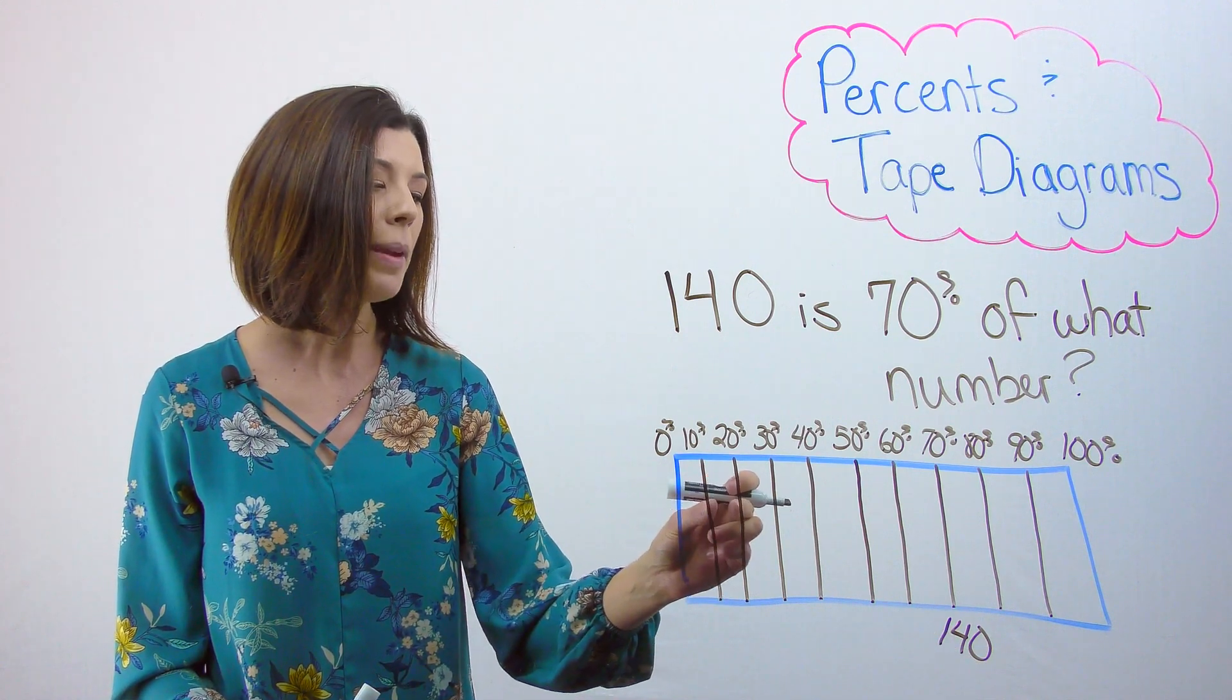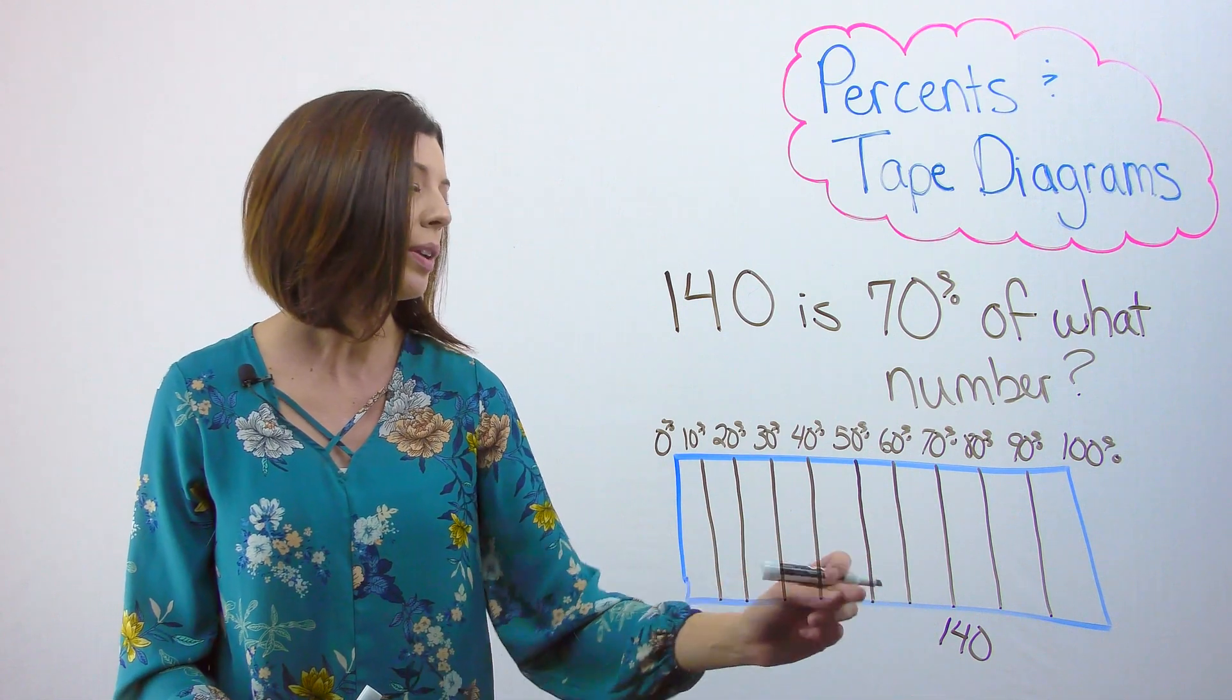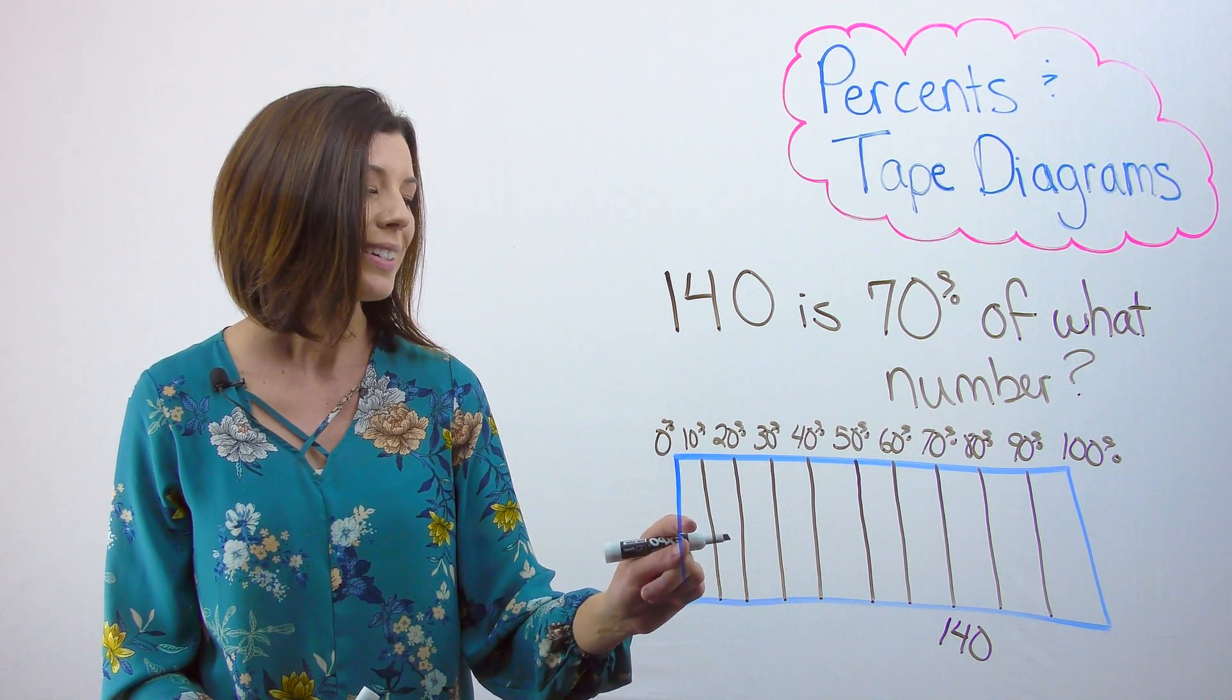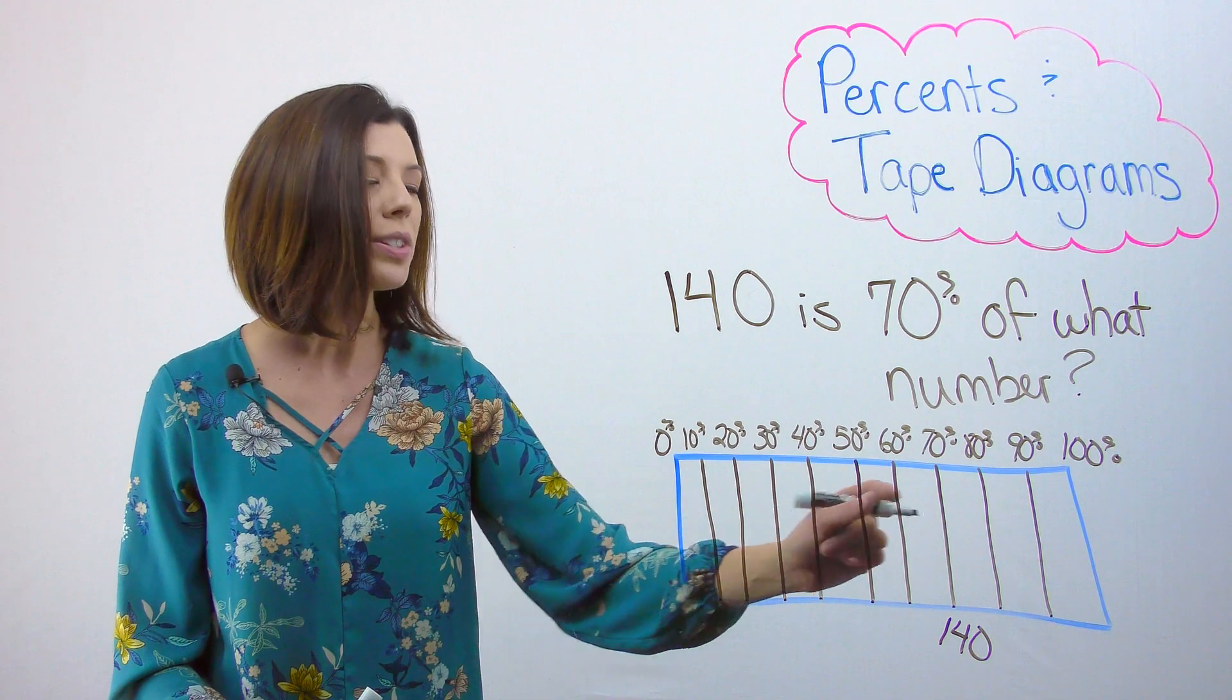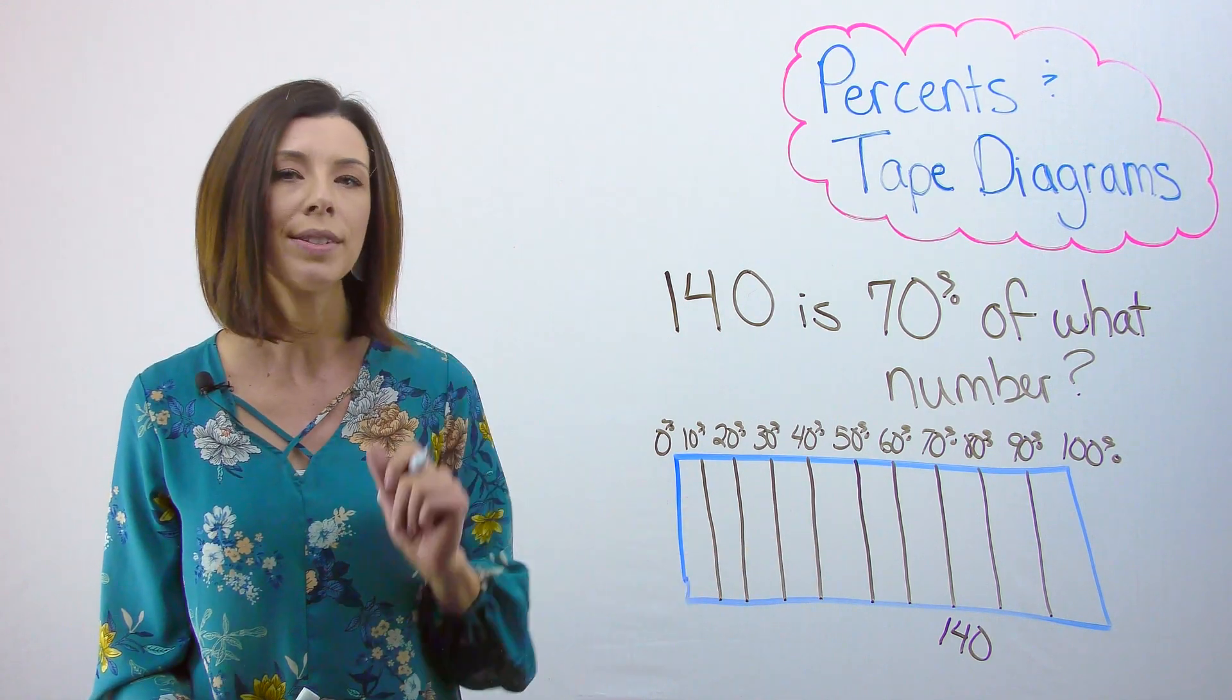then I could see how many of these sections go into this 140. So in other words, I can count 1, 2, 3, 4, 5, 6, 7. So what I'm going to try and figure out is if these are all seven equally sized sections, then what does just one section represent?